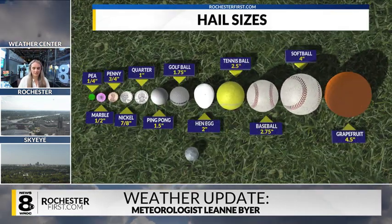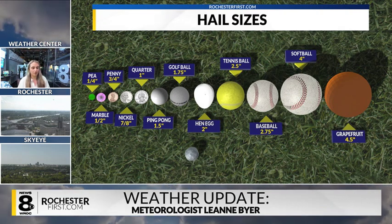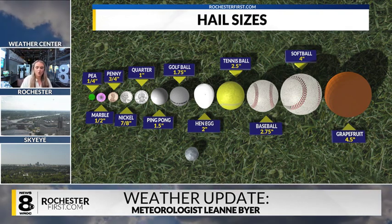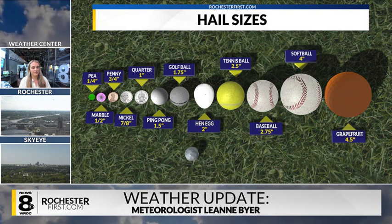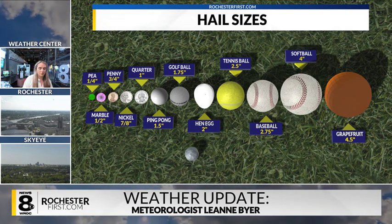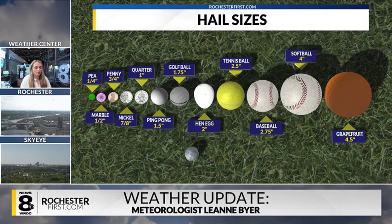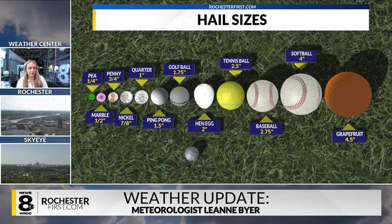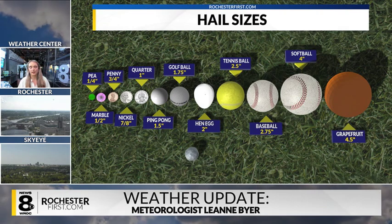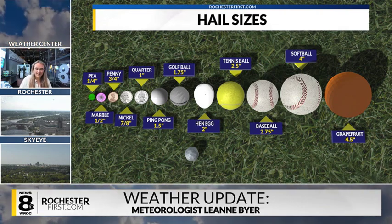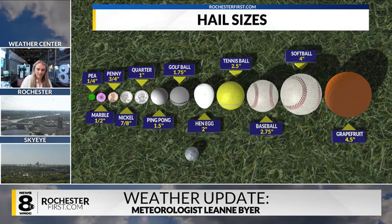Let's talk about different hail sizes. Here in Rochester we've had a crazy summer and we've had some reports of hailstones. I think the largest we had over the summer was right around 2 inches, maybe 2.5 inches. So pea size is maybe a quarter of an inch, marble is a half of an inch, and so on. The largest is a grapefruit at 4.5 inches. And I think the largest hailstone ever recorded in the United States was over in South Dakota in 2010 — it was about 8 inches, which is crazy.